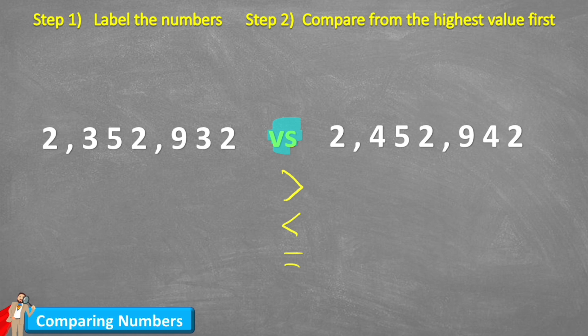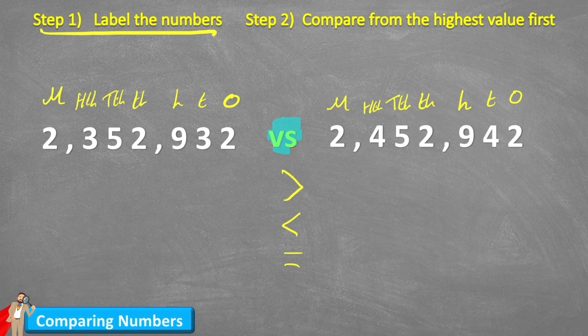So remember the first step, label the numbers. So I'm going to do that now. Boom, there we go. And now all I'm going to do is follow step two, which says compare from the highest value first. I'm going to look at the first column, the millions columns. And I can see that we both have a two. So that doesn't help us. But straight away, in the hundred thousands column, I can see a three and I can see a four.